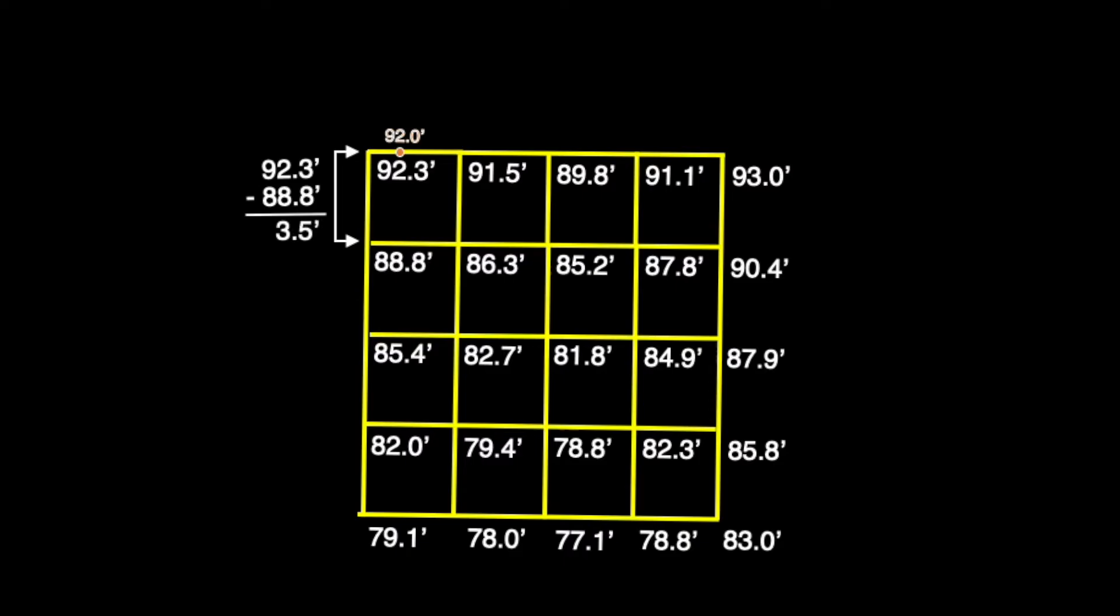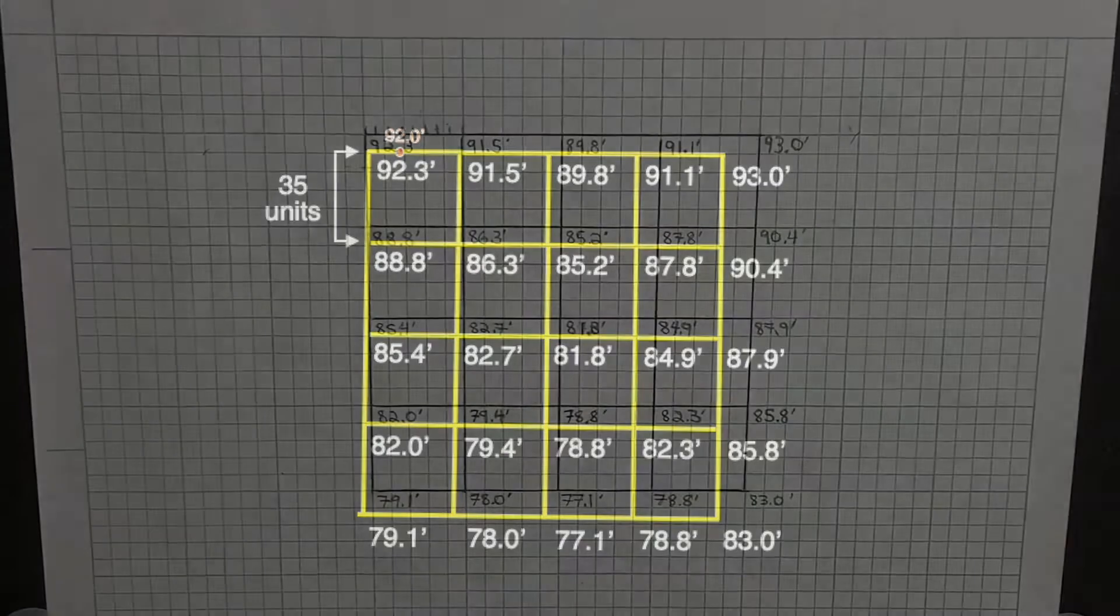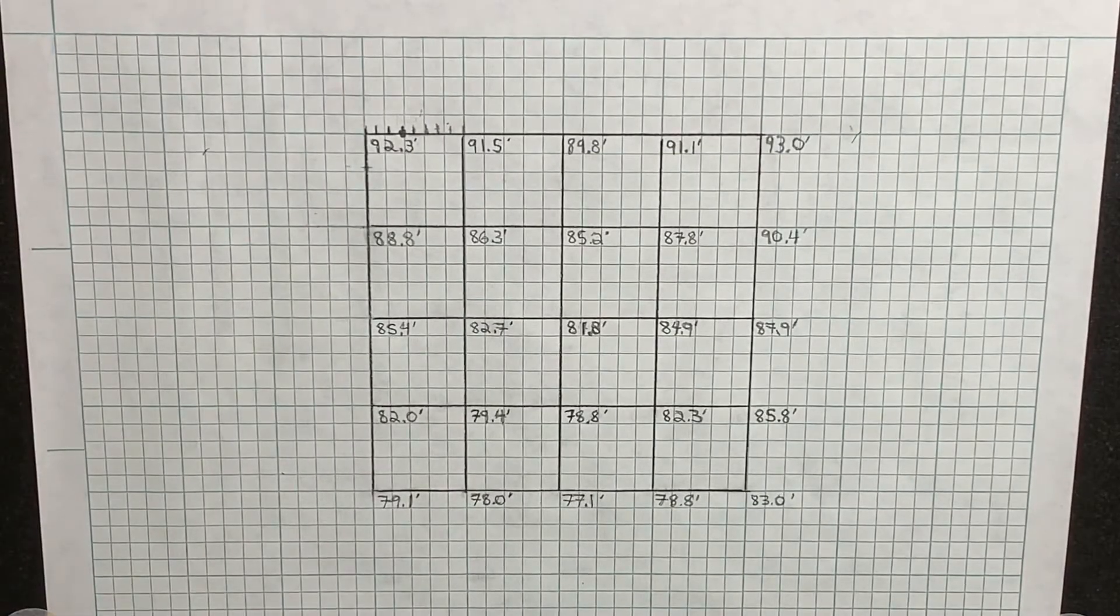which, after moving the decimal over one space to the right, reveals that we'll need 35 equal units of space in order to graphically interpolate where the 92-foot mark is.